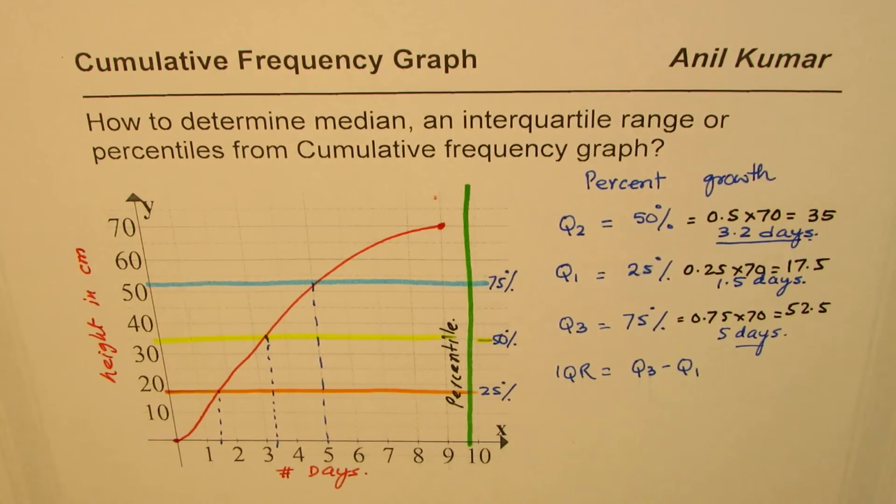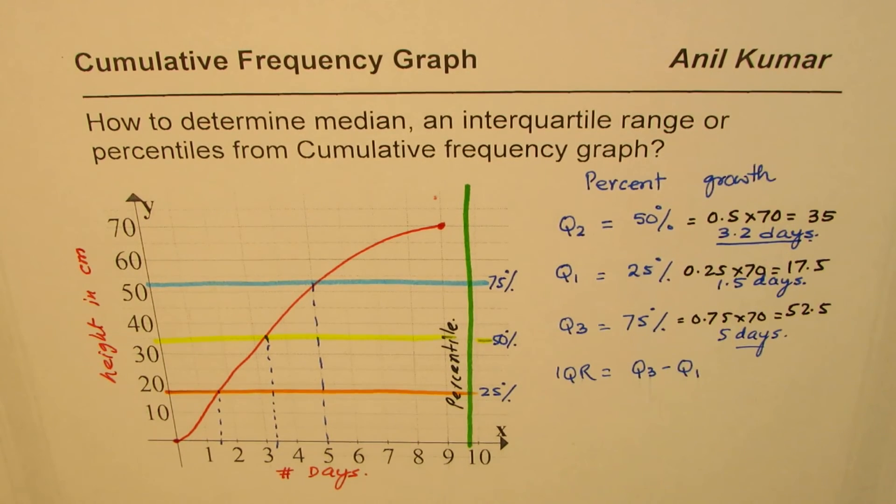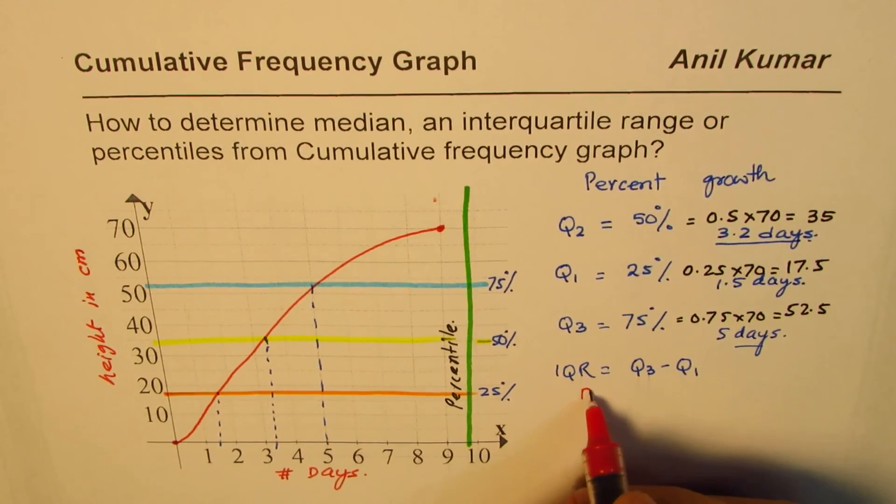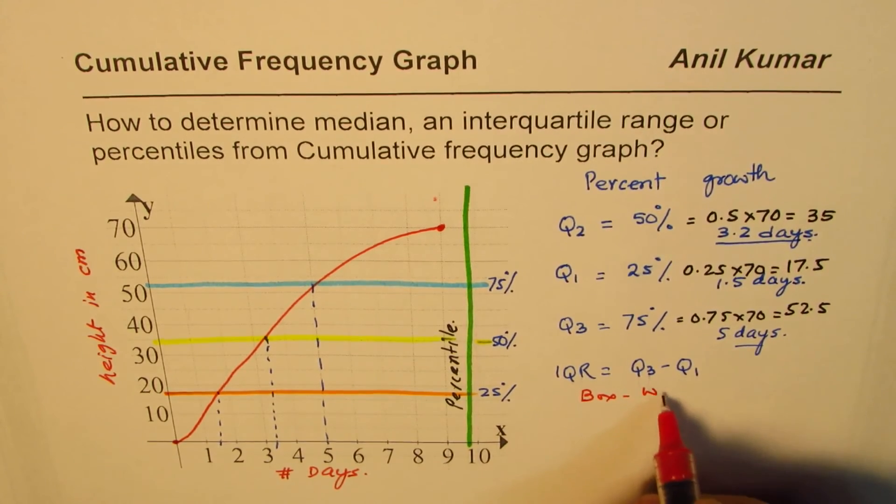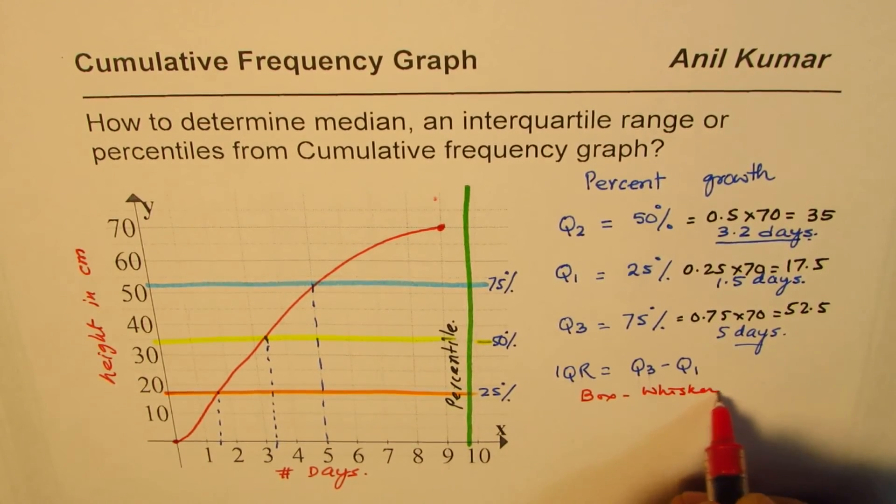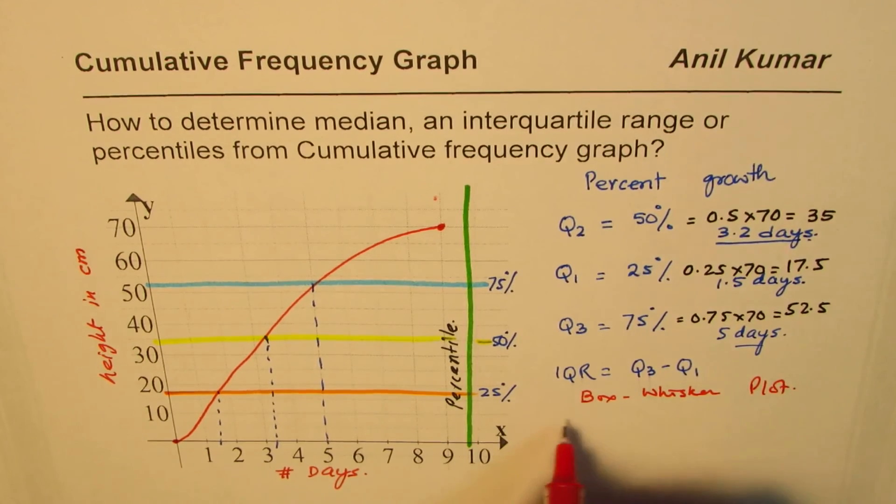So from a cumulative frequency graph you can actually do the reverse calculations and find the quartiles. Now as an exercise I'd like you to sketch a box and whisker diagram from the given data. So let this be an exercise for you.